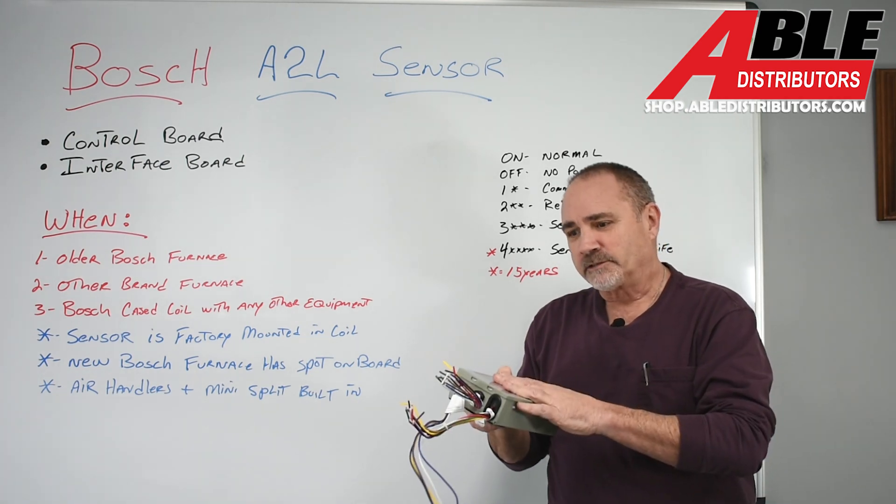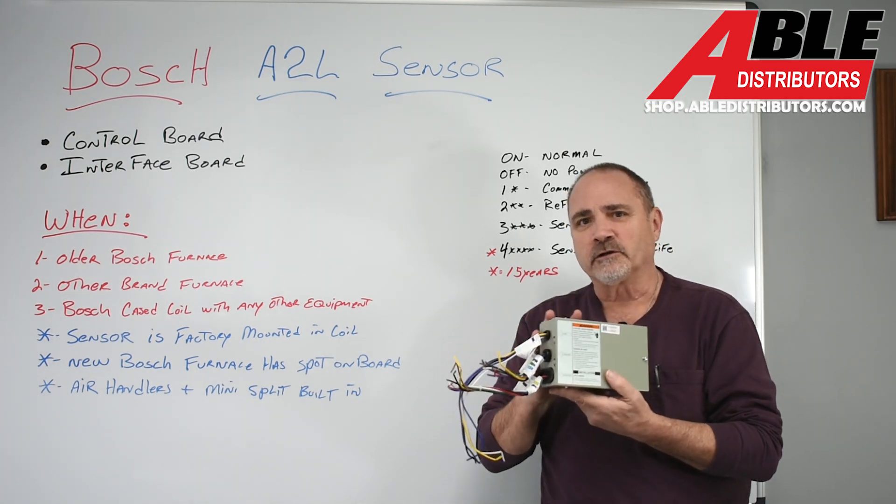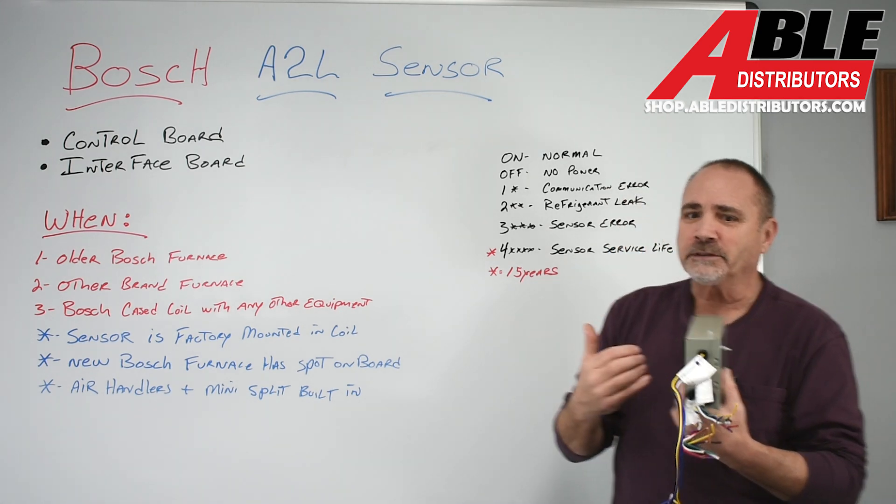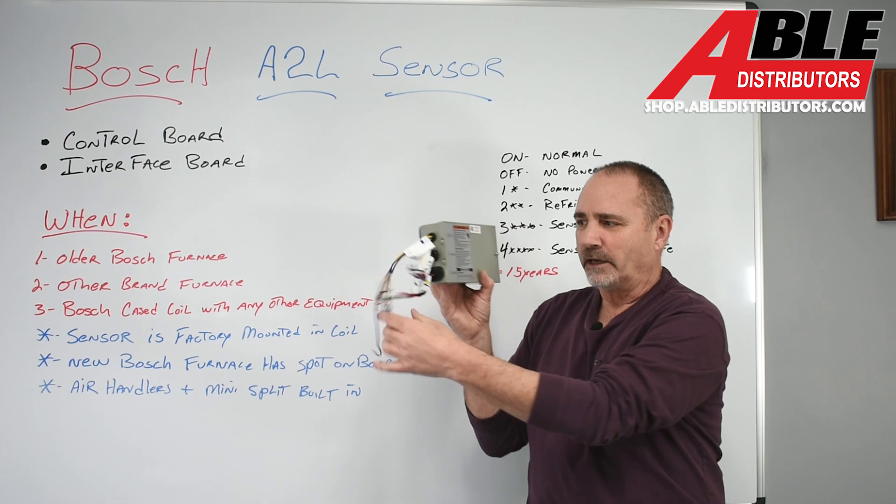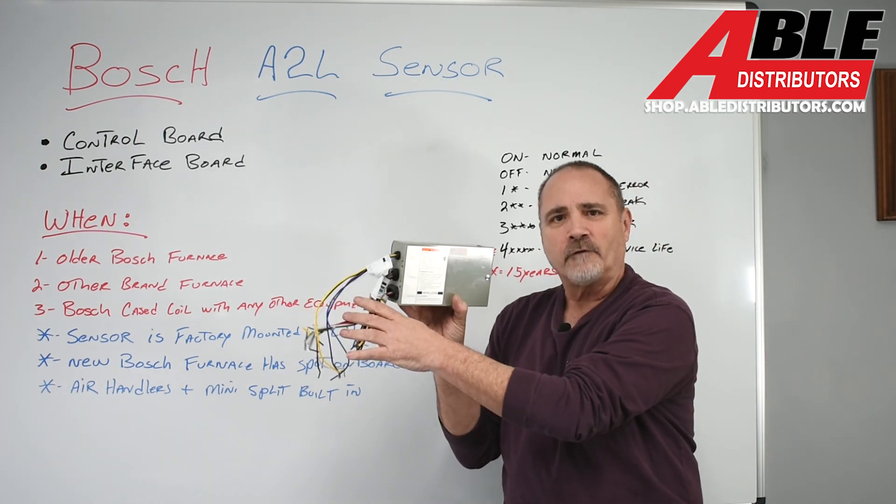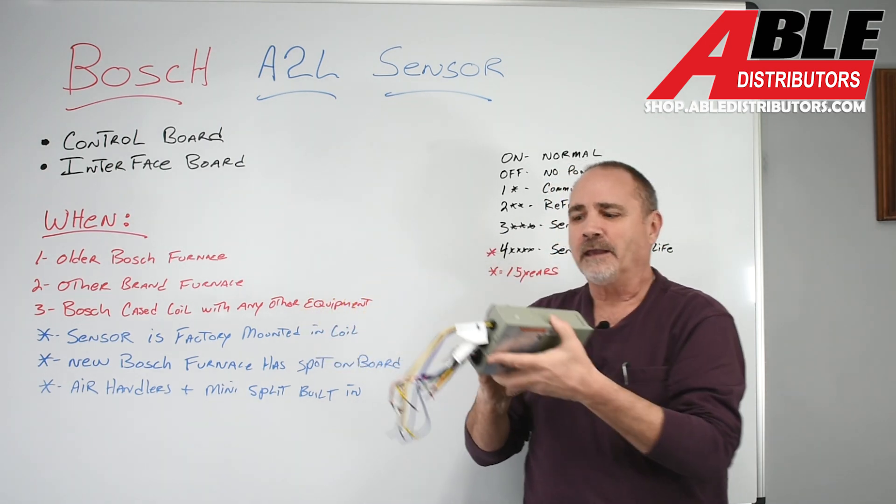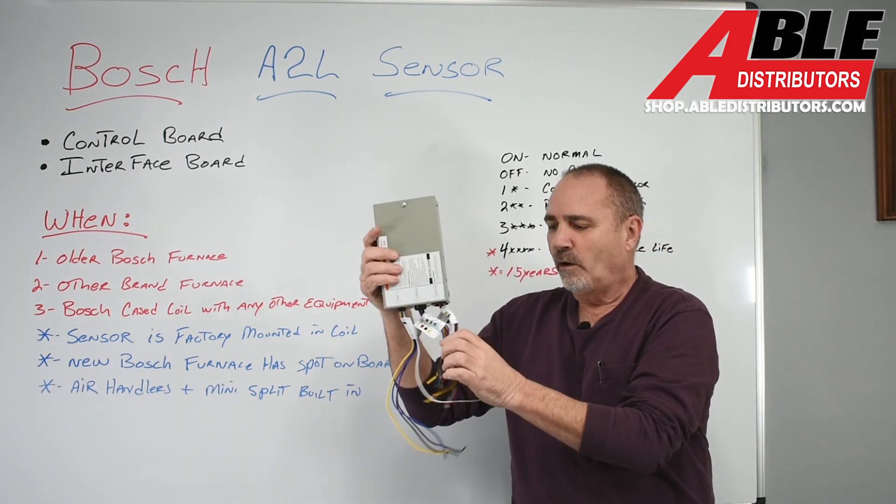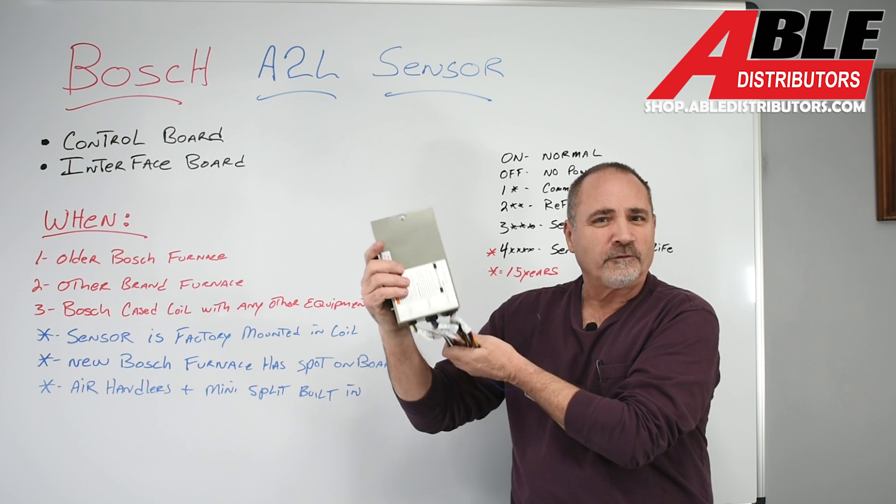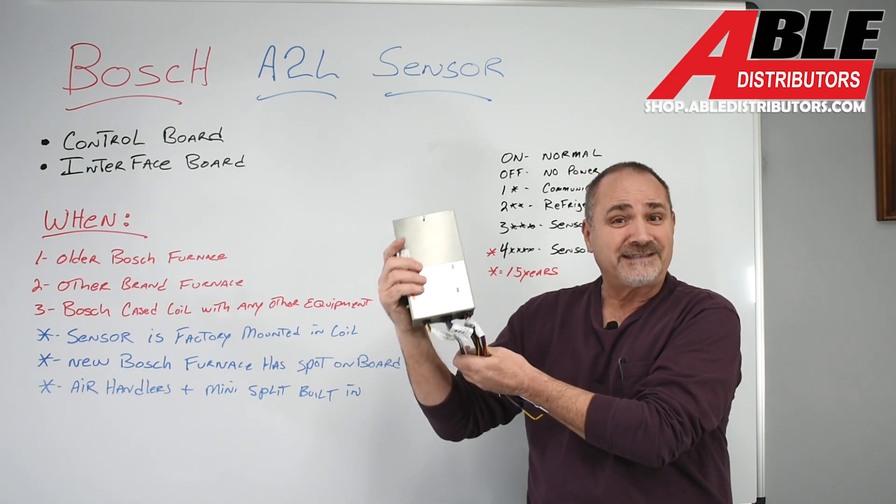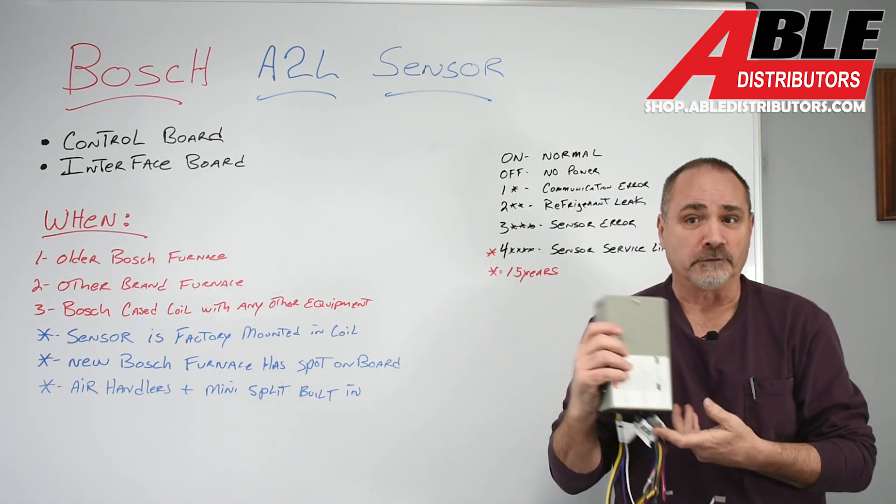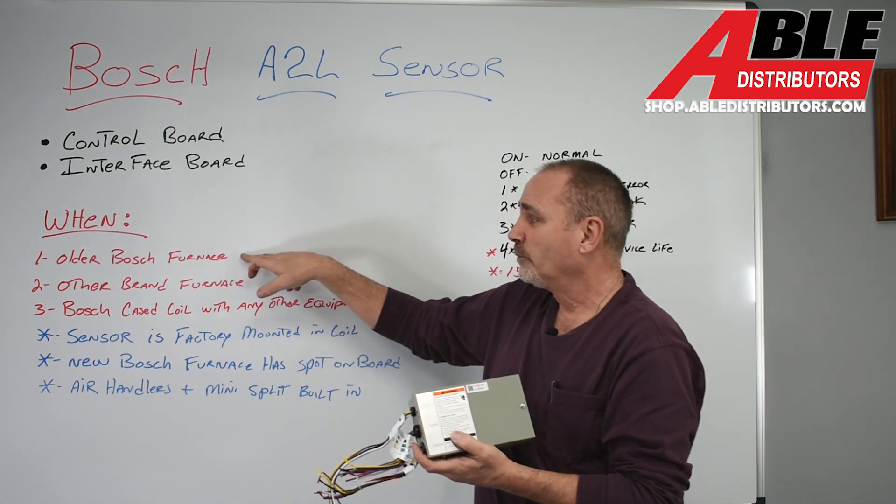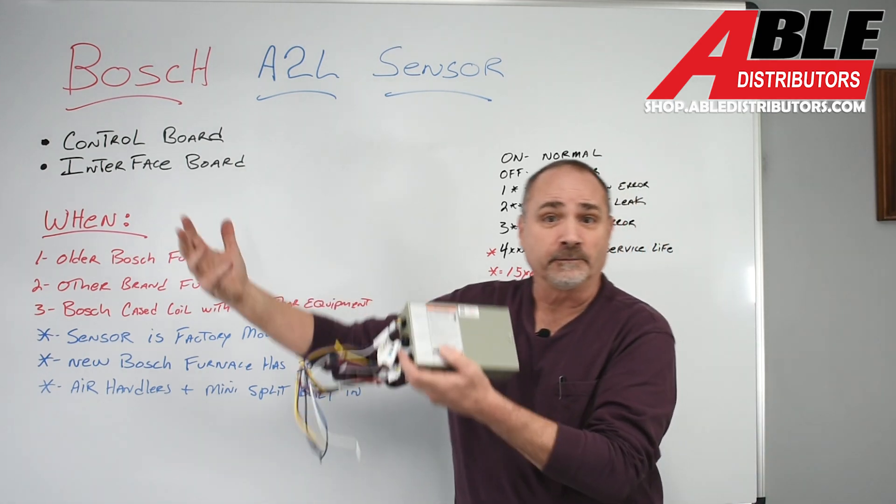So mounting this box. Now Bosch gives you a little sticker on where to mount this on the A-coil. This is the only thing. Personally, I don't think I would mount this on the A-coil and have a bunch of wire nuts dangling off in mid-air on my install. I think I would mount this probably down near the furnace, drill a hole, bring these wires into the furnace cabinet so all my wire nuts, all my mess is kind of concealed and my job looks really, really good. So again, you'll only need this older Bosch, other brands, or if you put their coil on something else.